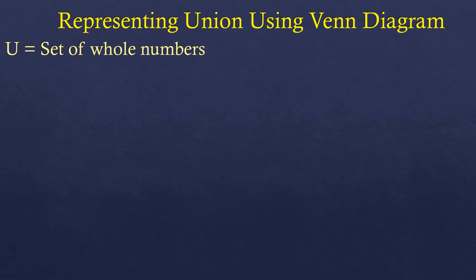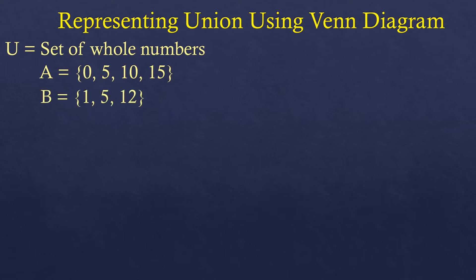Next, we are going to talk about representing set operations using Venn diagrams, starting with union. The universal set remains the set of whole numbers. Set A has elements 0, 5, 10, and 15. Set B has elements 1, 5, and 12.